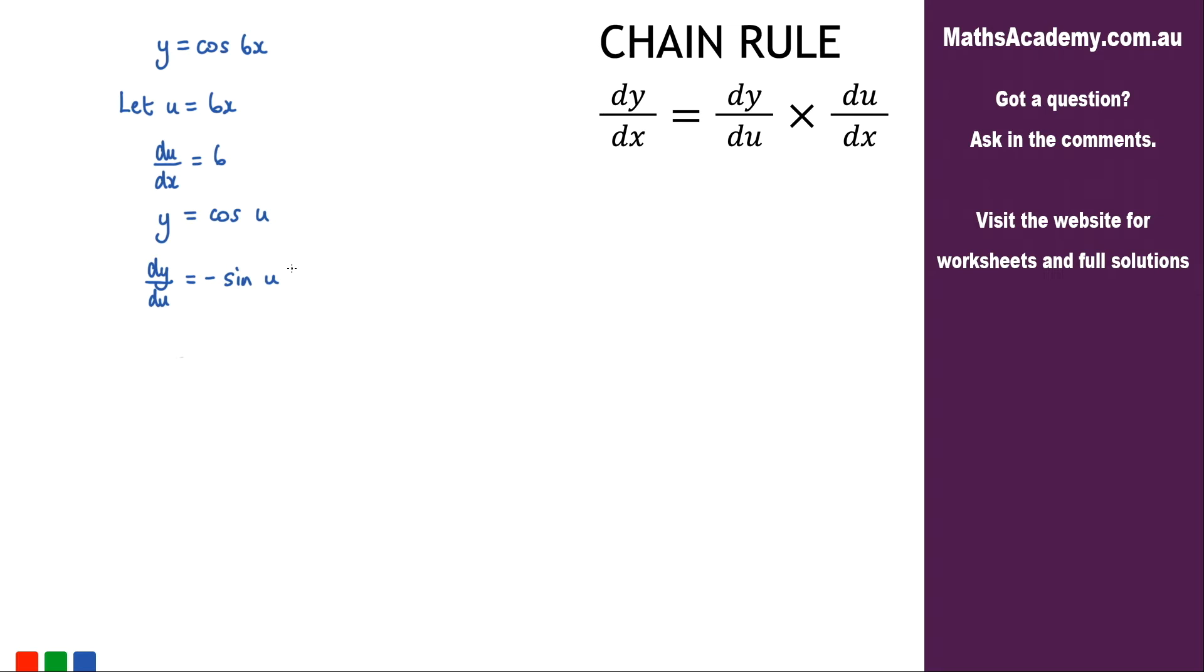Now that we've got both of those we can apply the chain rule. So dy by dx is equal to dy by du multiplied by du by dx. We know that dy by du is negative sine of u, and we are multiplying that by du by dx, and du by dx is 6. We can simplify this a little bit. We get negative 6 sine of u.